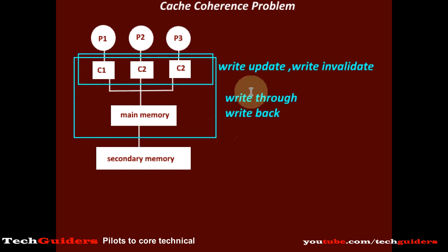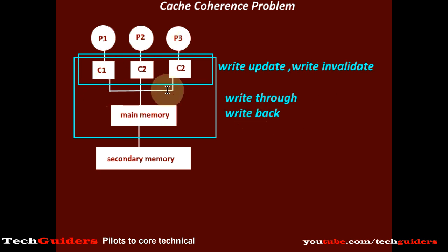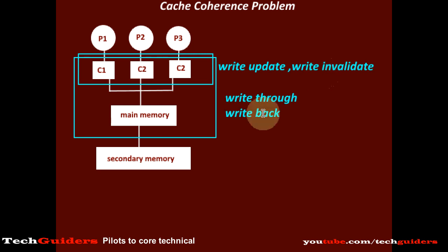The cache coherence protocol uses a combination of these four approaches to ensure the global data is the same everywhere throughout the system: write-through with write-update, write-through with write-invalidate, write-back with write-update, and write-back with write-invalidate.